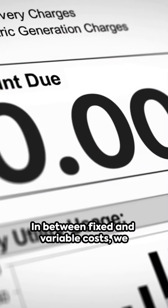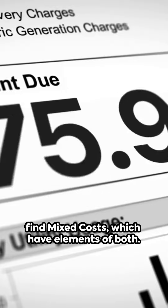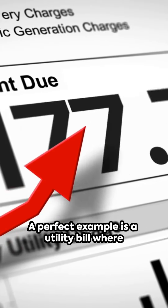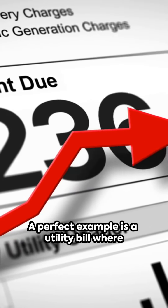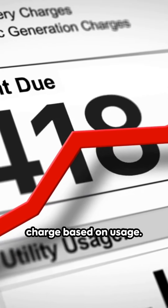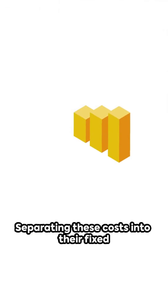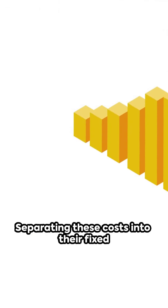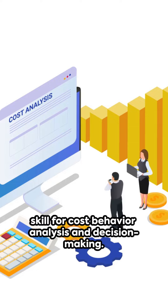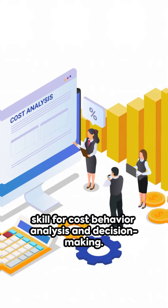In between fixed and variable costs, we find mixed costs, which have elements of both. A perfect example is a utility bill where there's a fixed charge plus a variable charge based on usage. Separating these costs into their fixed and variable components is a critical skill for cost behaviour analysis and decision making.